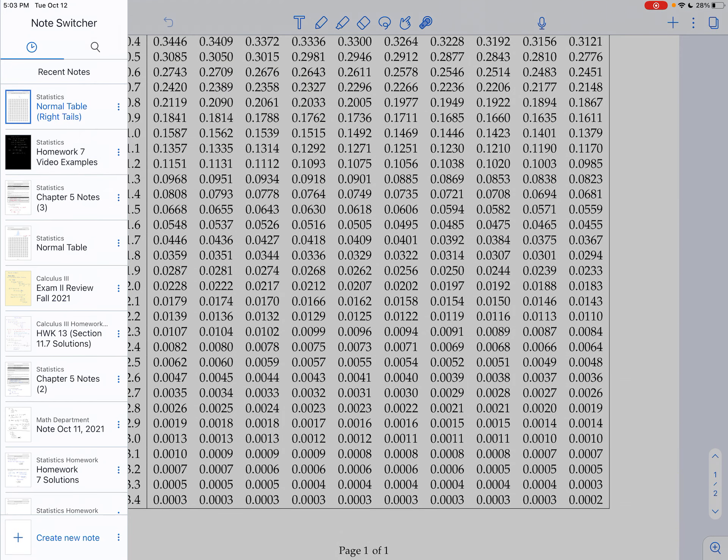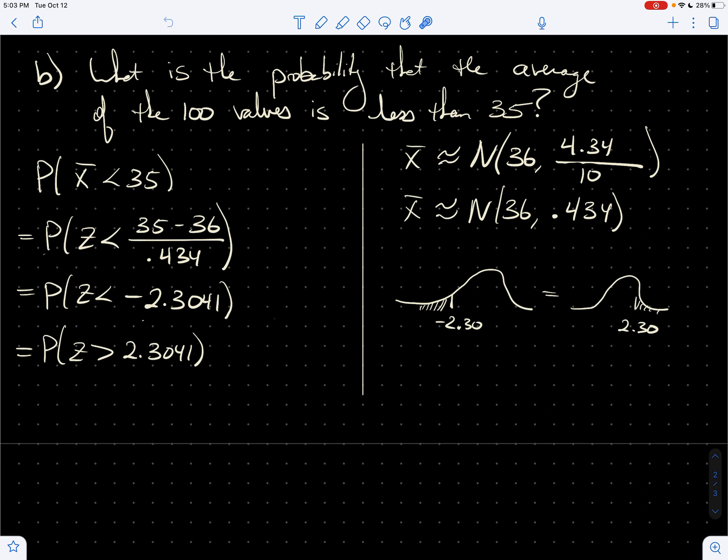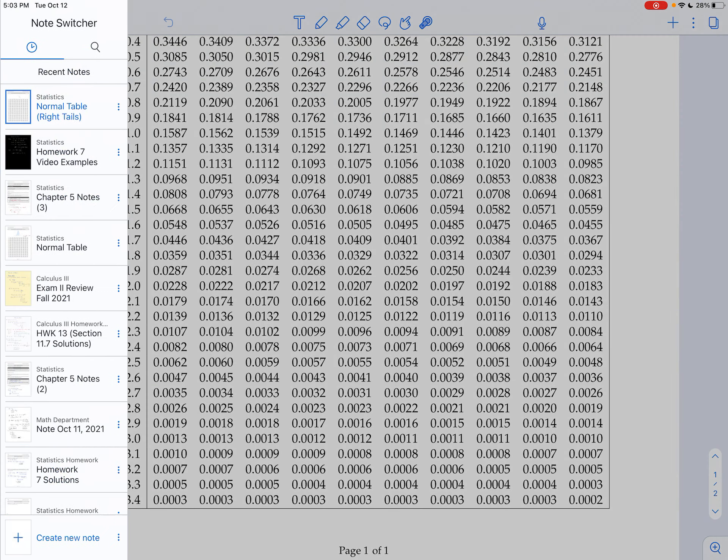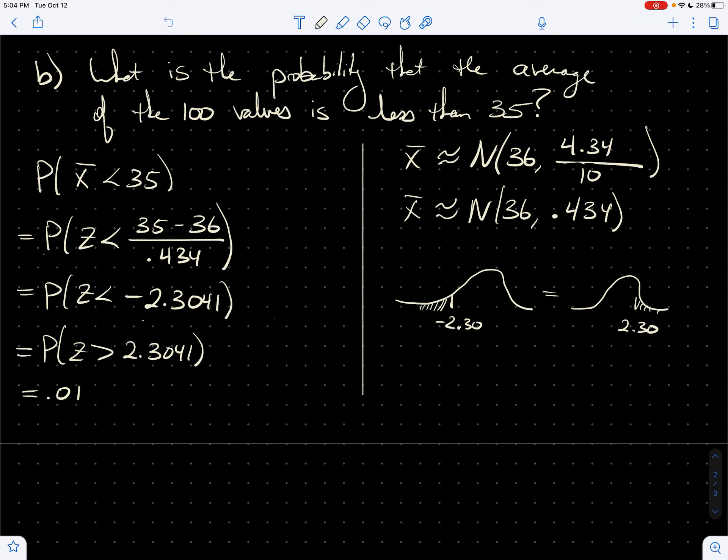Whoa. So I get, this is 0.01, was it a 7? I forgot, sorry. 2.30 is 0.0107. Okay, there we go, 0.0107.